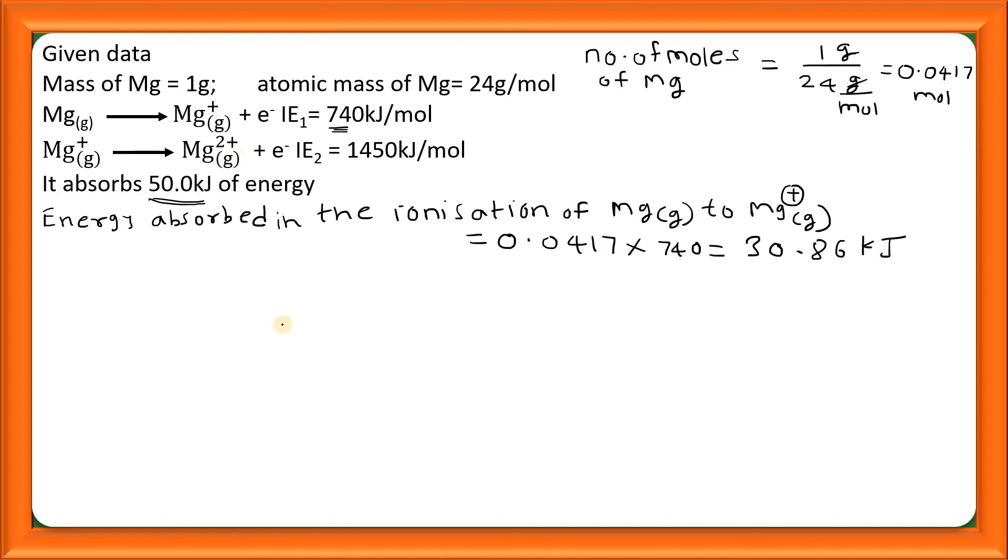Let's first calculate energy unused, equal to 50 minus 30.86, so यह आएगा 19.14 kilojoules. यह जो 19.14 kilojoules है, if this energy is used for conversion of Mg⁺ to Mg²⁺.